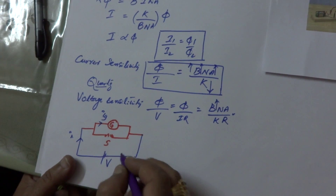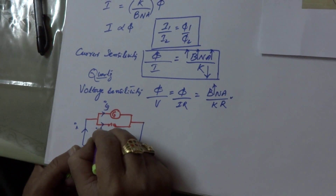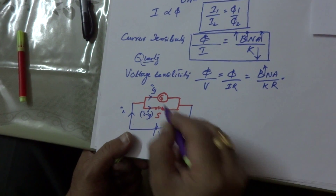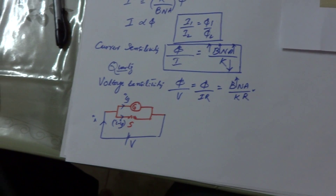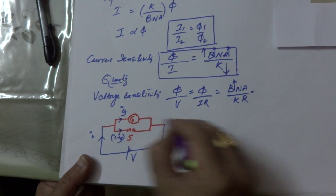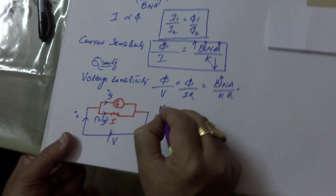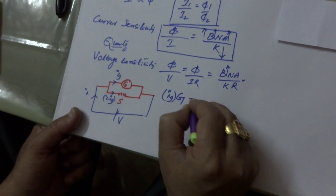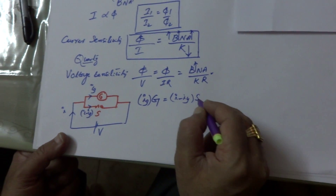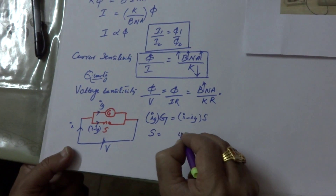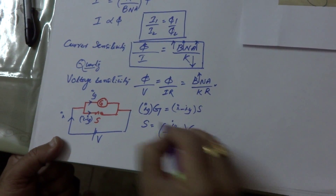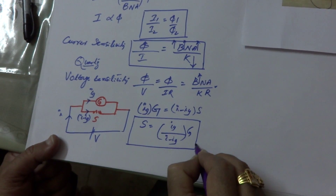Let us consider: the current passing through the galvanometer is Ig, and the remaining current should pass through the shunt. So the shunt protects the galvanometer because of its small resistance. Now if you want to calculate the value of shunt — as the two are connected in parallel, the potential difference across both must be the same. So the shunt S can be calculated by: Ig times G, which gives the formula for shunt. Based on this formula, some numericals can be asked.